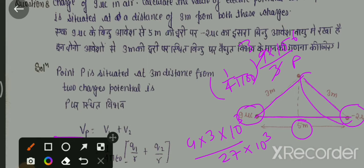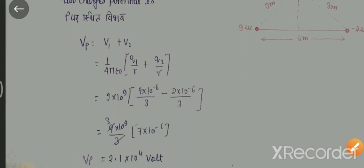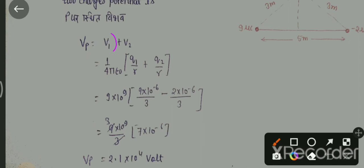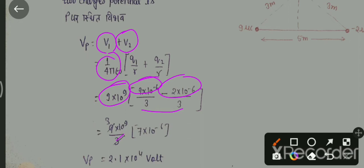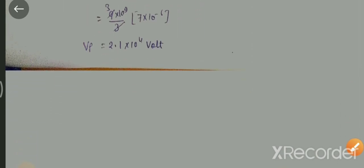इसी प्रकार से दूसरे charge से भी निकाल लेंगे। हमने shortcut करने का method निकाला। V₁ और V₂ दो potential हैं। इनमें 1 upon 4πε₀ यानी 9 × 10⁹ को common लिया, और 9 × 10⁻⁶ में से minus 2 × 10⁻⁶ को घटाया, नीचे divide by 3। 3 को common लेकर बाहर आया, 3 से 9 कट हो गया। 9 में से 2 गया, बचा 7। 7 × 3 = 21, और 10⁹ में से 10⁶ गया, तो 10³। इसलिए 21 × 10³ को 2.1 × 10⁴ करते हैं। तो यह हमारा potential होगा point P पर।